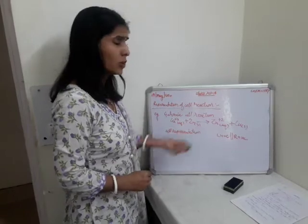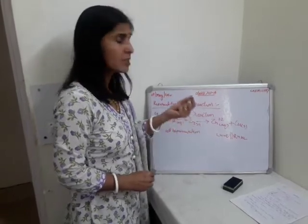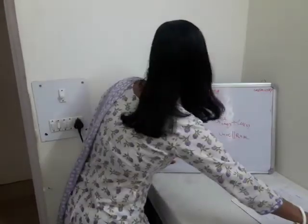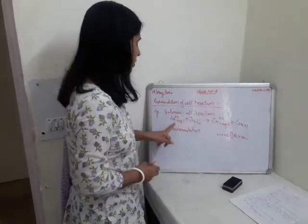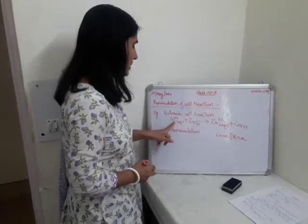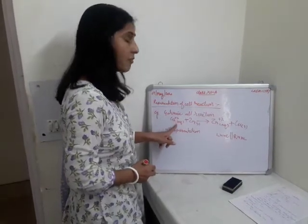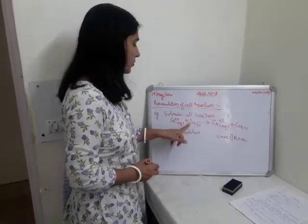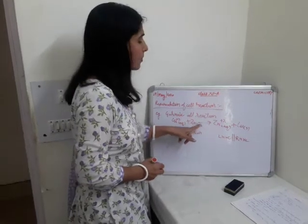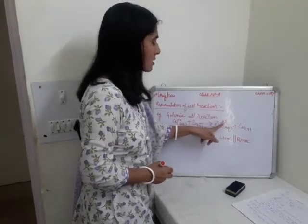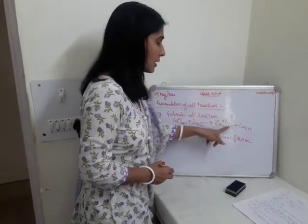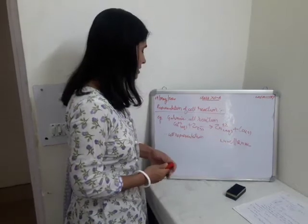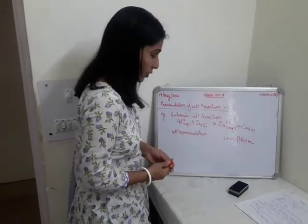I am giving you a very simple example, that is the galvanic cell. We know that when copper sulphate solution is treated with zinc solid, it gives us zinc ions and pure copper is deposited. How do we write this cell reaction?